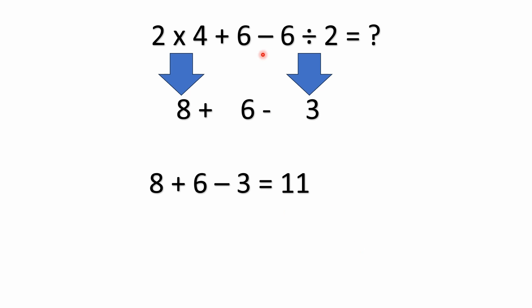We do the multiplication and division left to right. Two times four is eight. So now you have eight plus six. Don't forget, we've got this division here that we need to resolve before we do any adding or subtracting. Six divided by two is three. So we have eight plus six minus three. Eight plus six is 14, and 14 minus three gives us 11 — so the answer is 11.